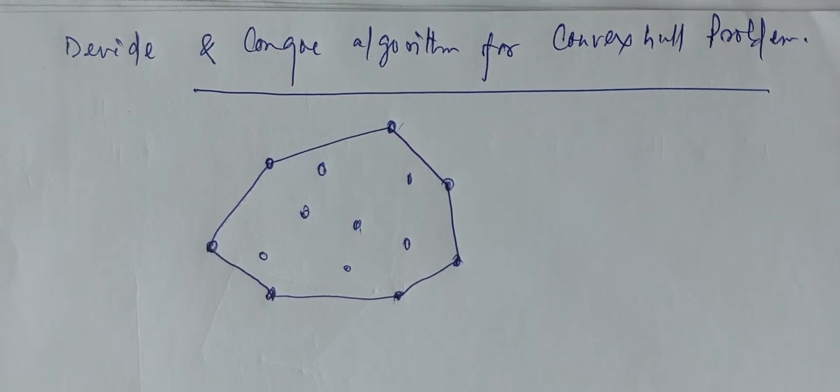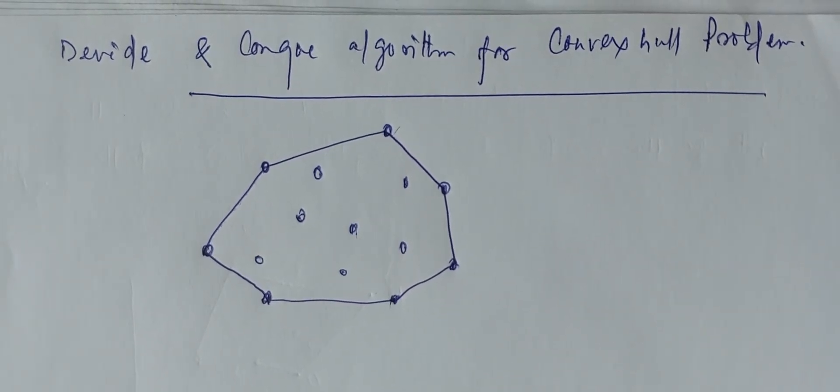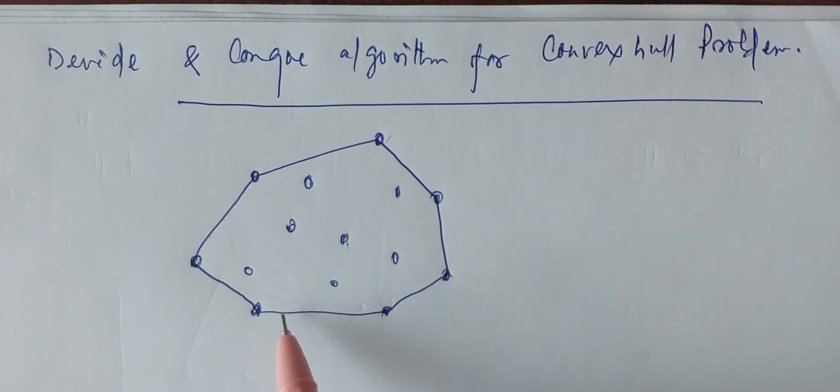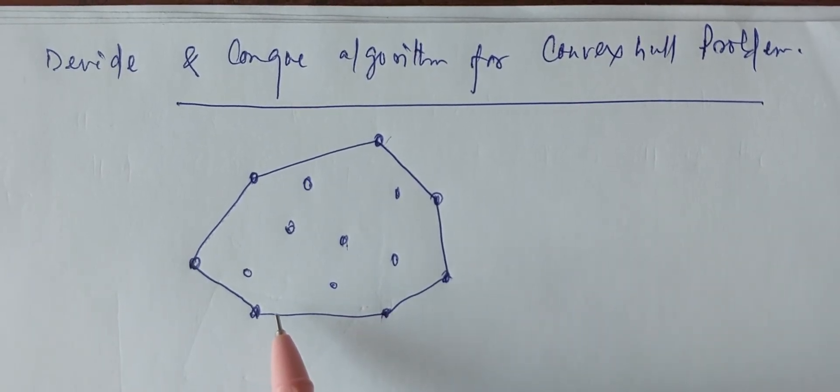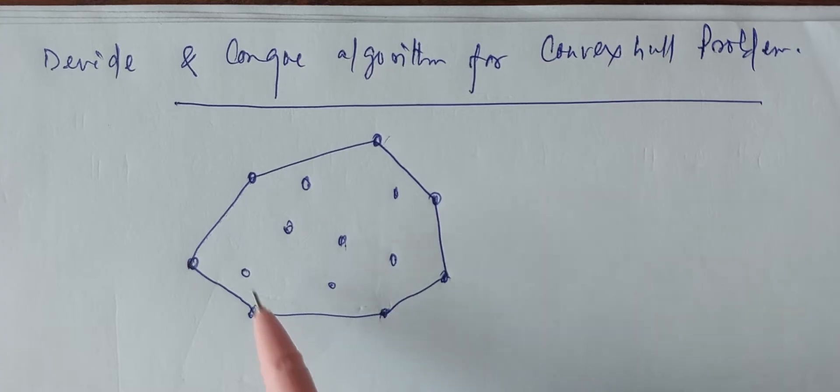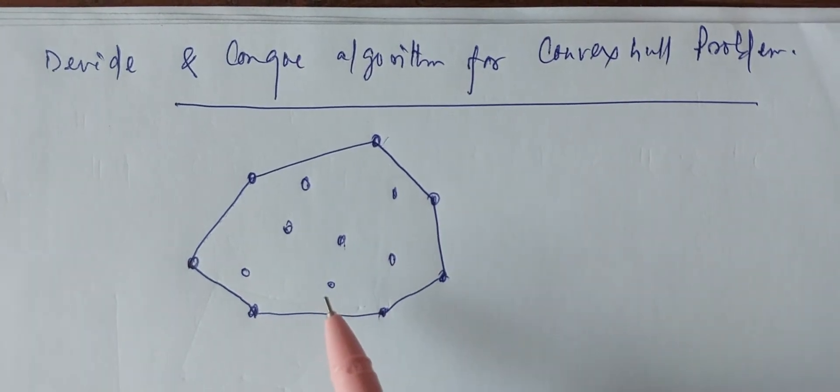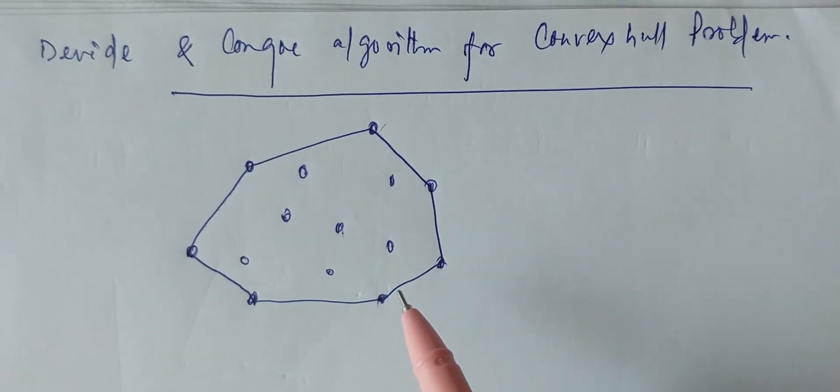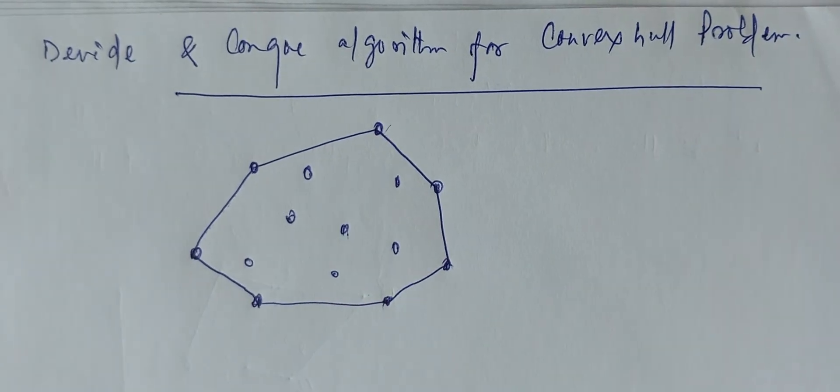Suppose there are some points on the space. As an example, it is the convex hull polygon which is including all the points available, and this is the shape which is minimum shape. That is why it is called as convex hull polygon.